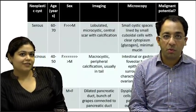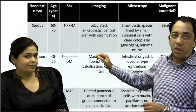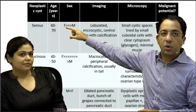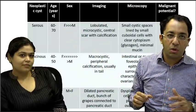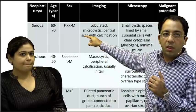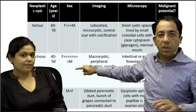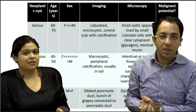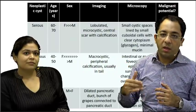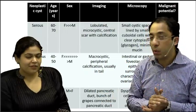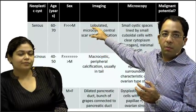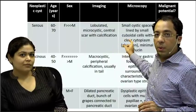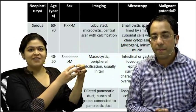Now for an important summary: looking at serous neoplasm, the age group is 60 to 70, while mucinous is 40 to 50 — and our patient was around 45, very typical for mucinous. There is a female predominance in serous and a tremendous female predominance in mucinous, explained by the ovarian stroma, with more than 95% of patients female. The examiner must mention a female patient for a cystic pancreatic neoplasm. Serous shows a micro-cystic appearance with a central scar and calcification.